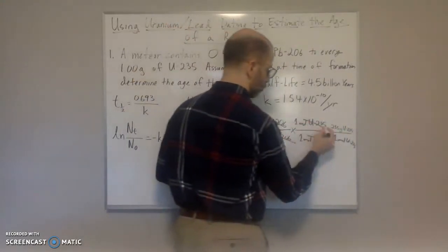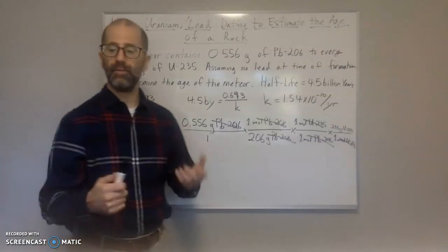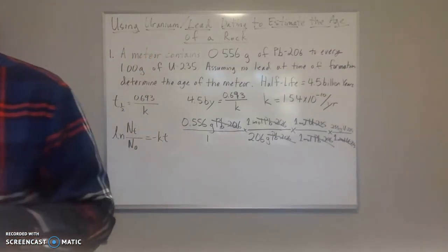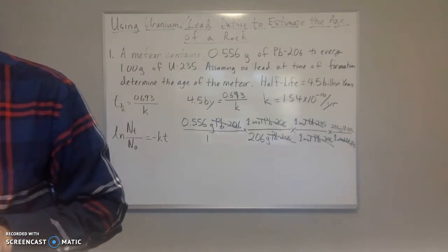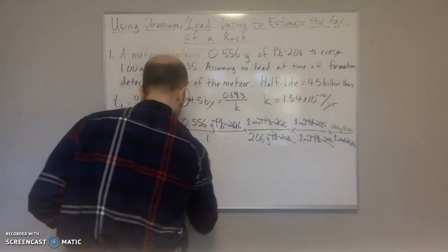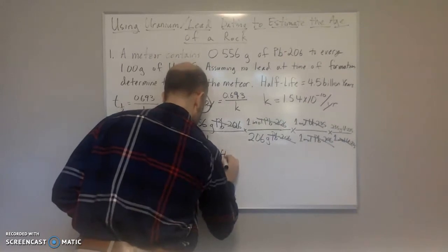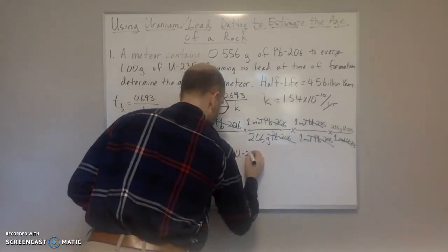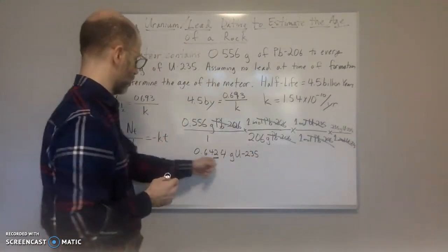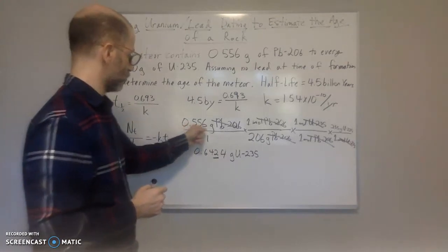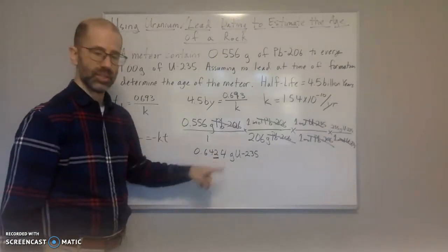So 1 mole of U-235 is equal to 235 grams of uranium-235. The moles of U-235 cancel out. Now you've got grams of uranium-235. We're going to do our calculation. And when we do the calculation, we get 0.6424.